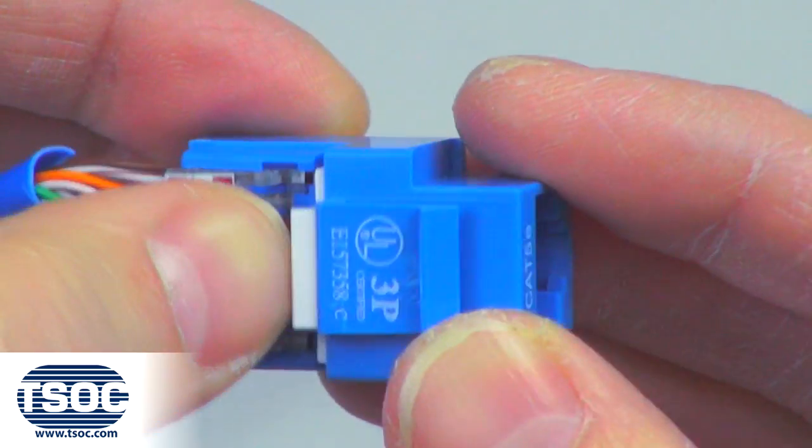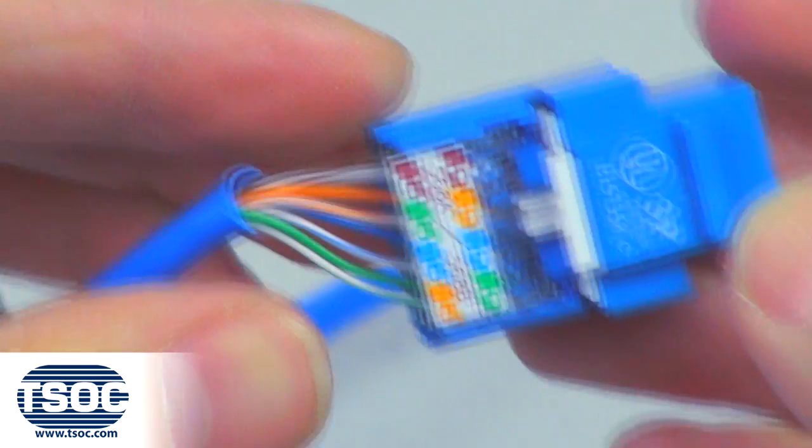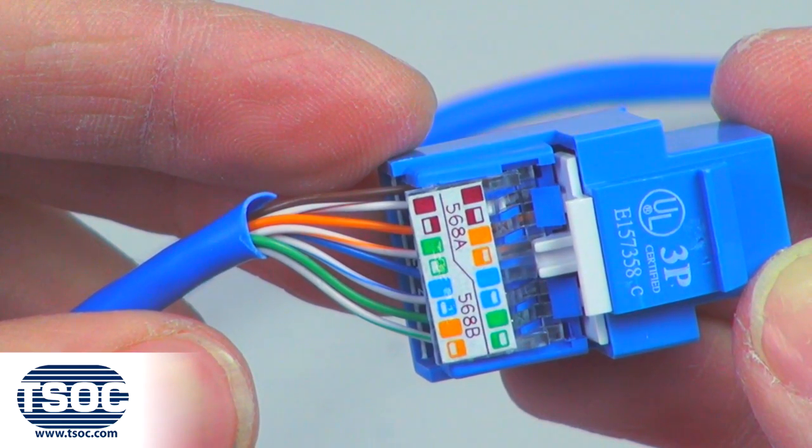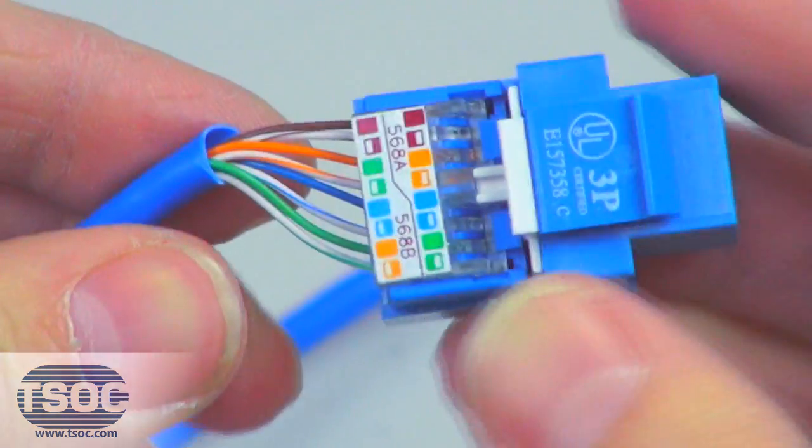Step 6. Insert the CAT-5E RJ-45 Toolless Keystone Module into the designated TSOC wall plate, surface box or patch panel.